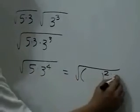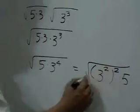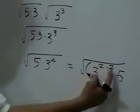And 5 will stay as 5, and 3 to the 4th will be written as 3 squared quantity squared.